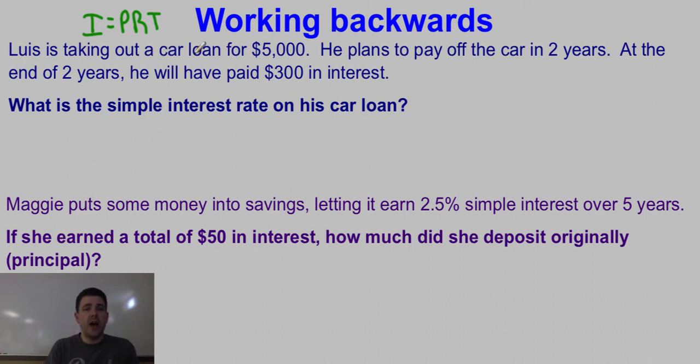It says Lewis is taking out a car loan for $5,000. That's my principal. He plans to pay off the car in two years. That's my time. At the end of two years, he will have paid $300 in interest. That's my I, meaning I don't know what my rate is, that's the piece that I'm missing.